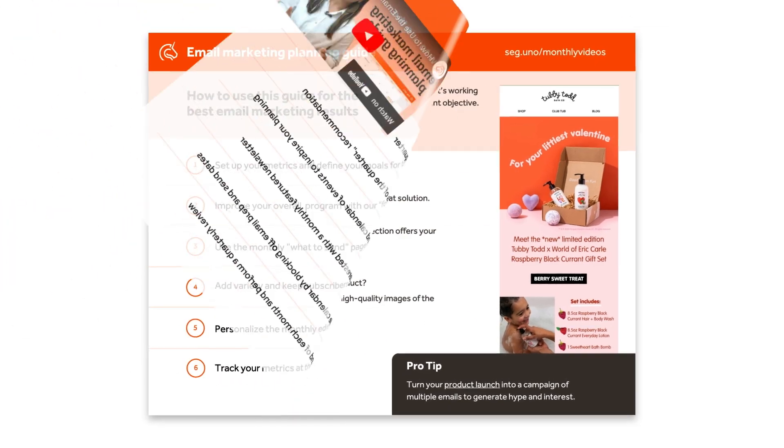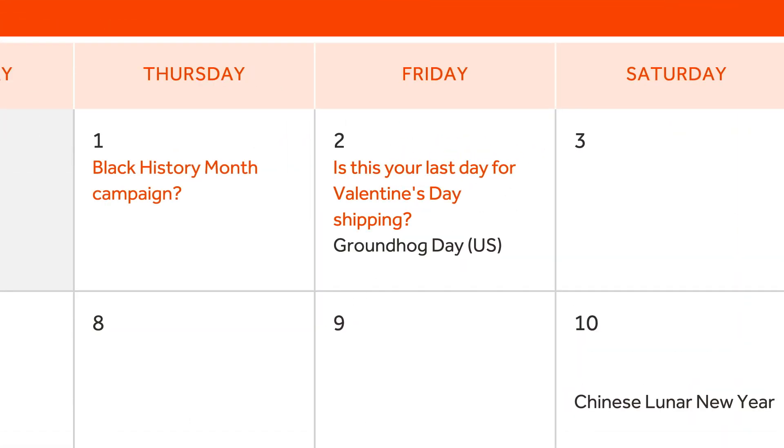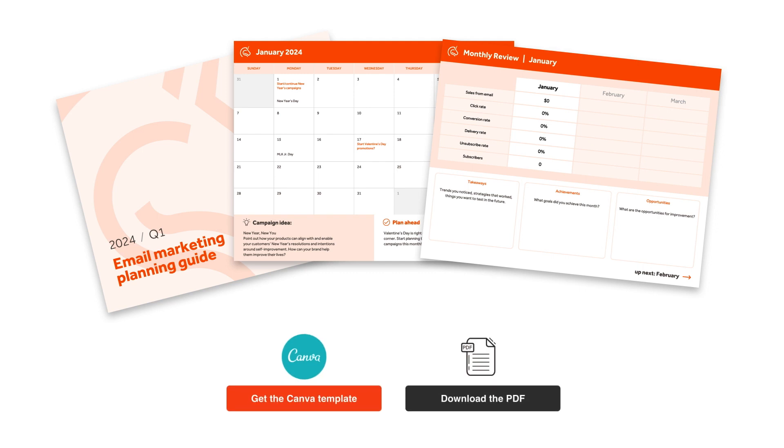Seguno's quarterly planning guide offers all the suggestions and tactics that a Shopify store needs to develop a robust email calendar. This tool is fully customizable and filled with timely content ideas and tips on email strategy. All quarterly planning guides are available as a PDF or Canva template. We recommend using Canva for customization flexibility, but as always, choose the option that works best for you and your business.